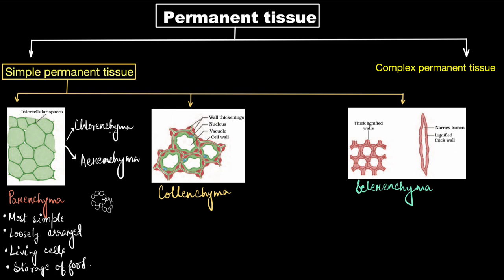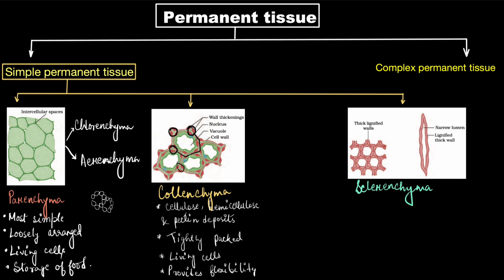The next type of simple permanent tissue is colenchyma. They are again living cells, but their cell wall is not as thin as parenchyma. Instead, there is deposition of cellulose, hemicellulose, and pectin in the corners of the cell, making their cell wall a little thick and leaving very little intercellular spaces. The main job of this tissue is to provide flexibility to the plant — for example, the coiled and flexible tendrils of climbers are due to colenchyma.